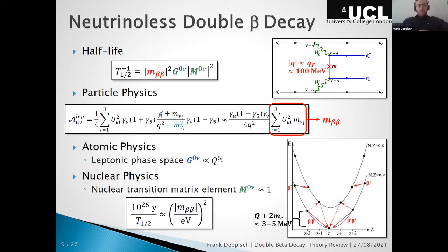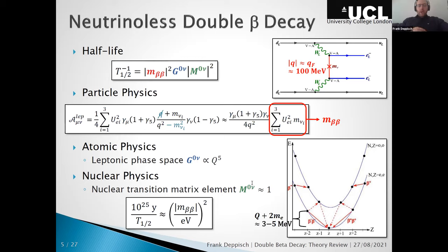From the atomic physics part, we calculate the atomic phase space from two electrons going through the atomic shell and being affected by the remaining nucleus charge — giving dependence on the Q value to the fifth power. The most difficult part in theoretical calculations is the nuclear part: it's a many-body problem for heavy isotopes. If nuclear matrix elements are estimated to be of order one, we get half-lives of neutrinoless double beta decay of order 10²⁵ years for effective neutrino masses of order the electron volt scale.